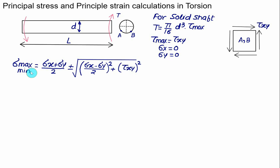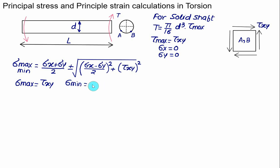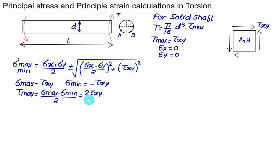The maximum and minimum principal stresses are calculated as (σ_x + σ_y)/2 ± √[((σ_x − σ_y)/2)² + τ_xy²]. Since σ_x and σ_y are both zero, both terms reduce so that σ_max = +τ_xy = τ_max and σ_min = −τ_xy. The maximum in-plane shear stress equals (σ_max − σ_min)/2 = 2τ_xy/2 = τ_xy.